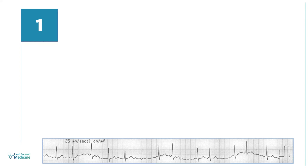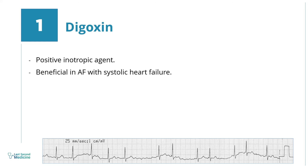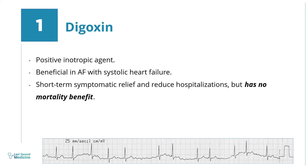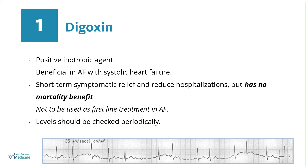Number 1. Digoxin is a positive inotropic agent. Its use is very beneficial in AF with systolic heart failure and provides short-term symptomatic relief. It will decrease frequency of hospitalizations, but it has no mortality benefit, and thus it is not a first-line treatment in AF. If it is used, serum digoxin levels should be checked periodically.